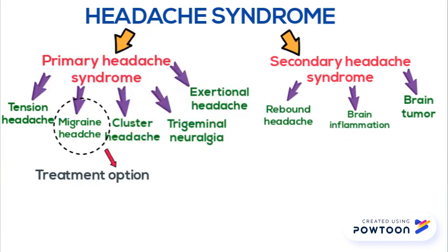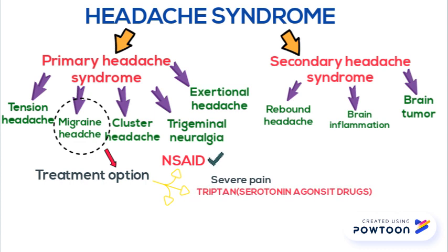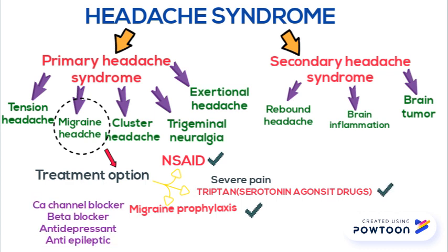The treatment options available for Migraine Headache are NSAIDs for pain control, Triptans which are Serotonin Agonist drugs for severe pain control, and for Migraine Prophylaxis the drugs are Calcium Channel Blockers, Beta Blockers, Anti-Depressants, and Anti-Epileptics.